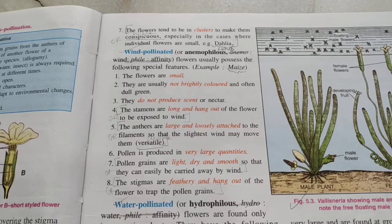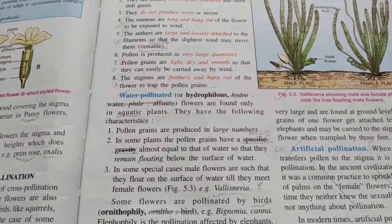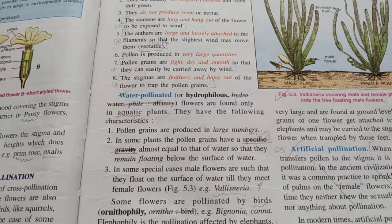If pollination takes place with the help of water, such pollination is called hydrophily and the flowers are called hydrophilous. The characteristics of such flowers are that pollen grains are produced in large numbers, and often the pollen grains have the same density as water so that they can float on the surface of water.